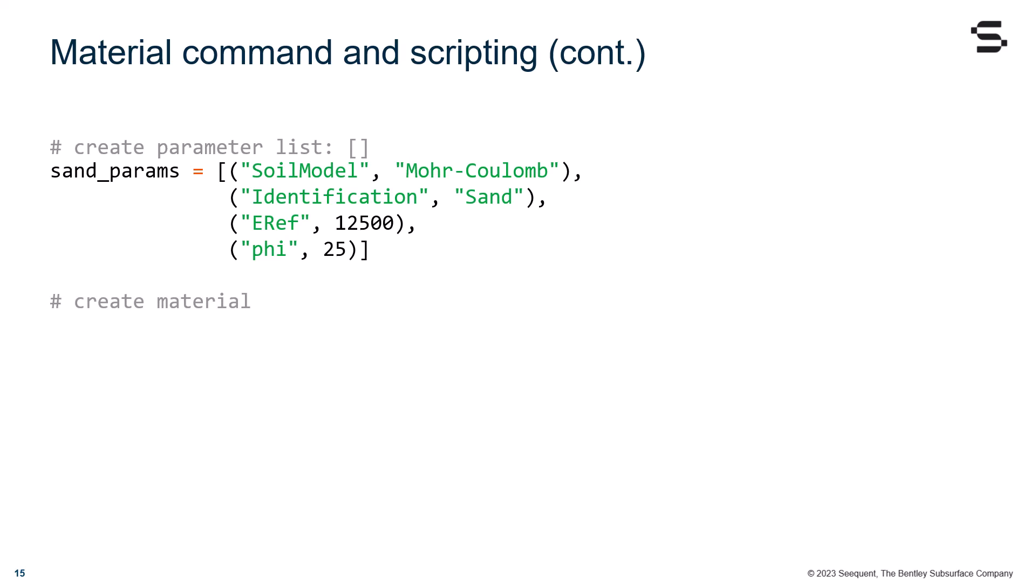Then, I call the soilmat command using the unpacking argument, and assign the object created to a variable I call here Sand_MC. Note that the material name identification of the soil material object is just Sand, as can be seen in the sand_params list.